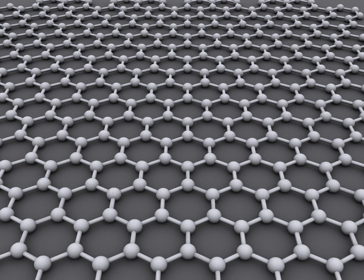Graphene is the only form of carbon, or solid material, in which every atom is available for chemical reaction from two sides, due to the 2D structure. Atoms at the edges of a graphene sheet have special chemical reactivity. Graphene has the highest ratio of edge atoms of any allotrope. Defects within a sheet increase its chemical reactivity. The onset temperature of reaction between the basal plane of single-layer graphene and oxygen gas is below 260°C. Graphene combusts at 350°C. Graphene is commonly modified with oxygen and nitrogen-containing functional groups and analyzed by infrared spectroscopy and X-ray photoelectron spectroscopy.